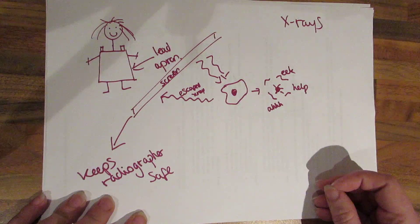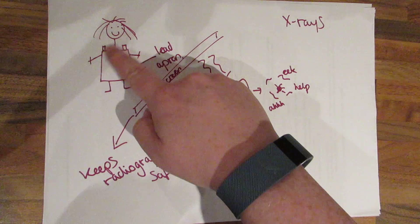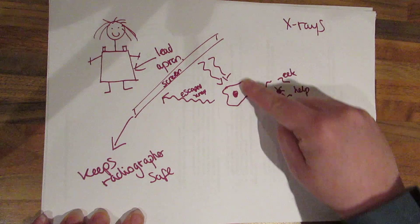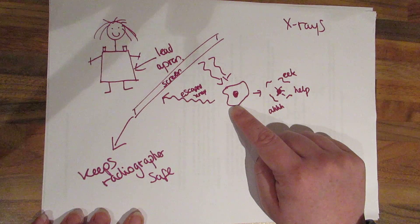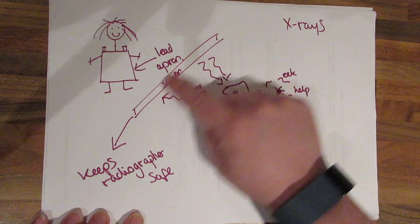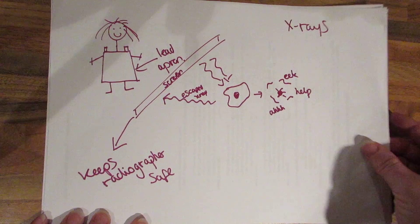So someone giving you an x-ray is going to be wearing a lead apron and they're going to be standing behind the screen because the x-rays could potentially damage and kill cells and any escaped x-rays are going to get picked up by the screen and the screen in the lead apron keep a radiographer safe.